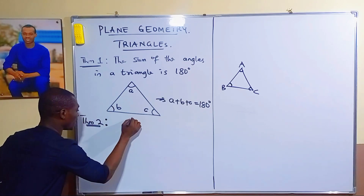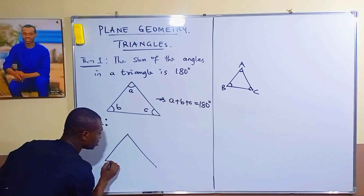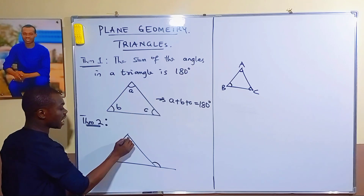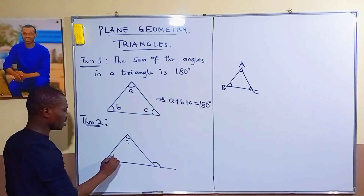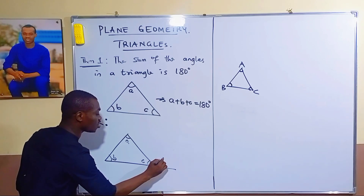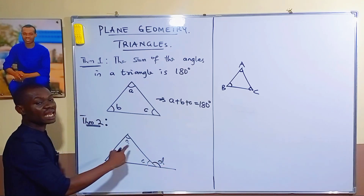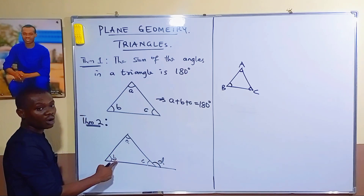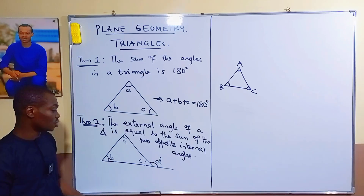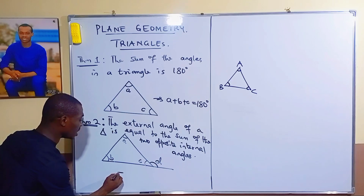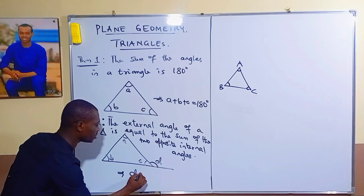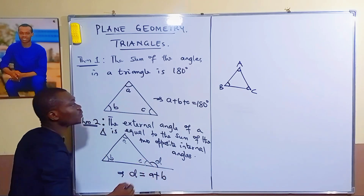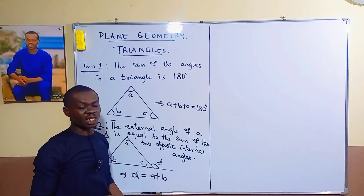Theorem two: if you have a triangle with an external angle — say the triangle has vertices A, B, C and an external angle D — then any external angle of a triangle is always equal to the sum of the two opposite internal angles. So D equals A plus B.